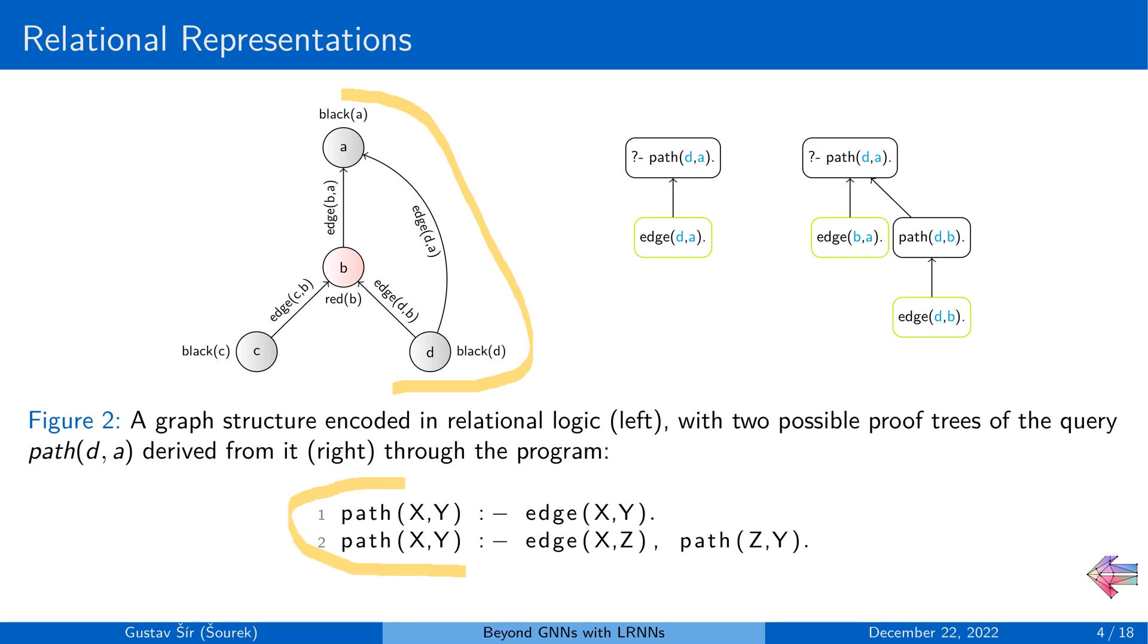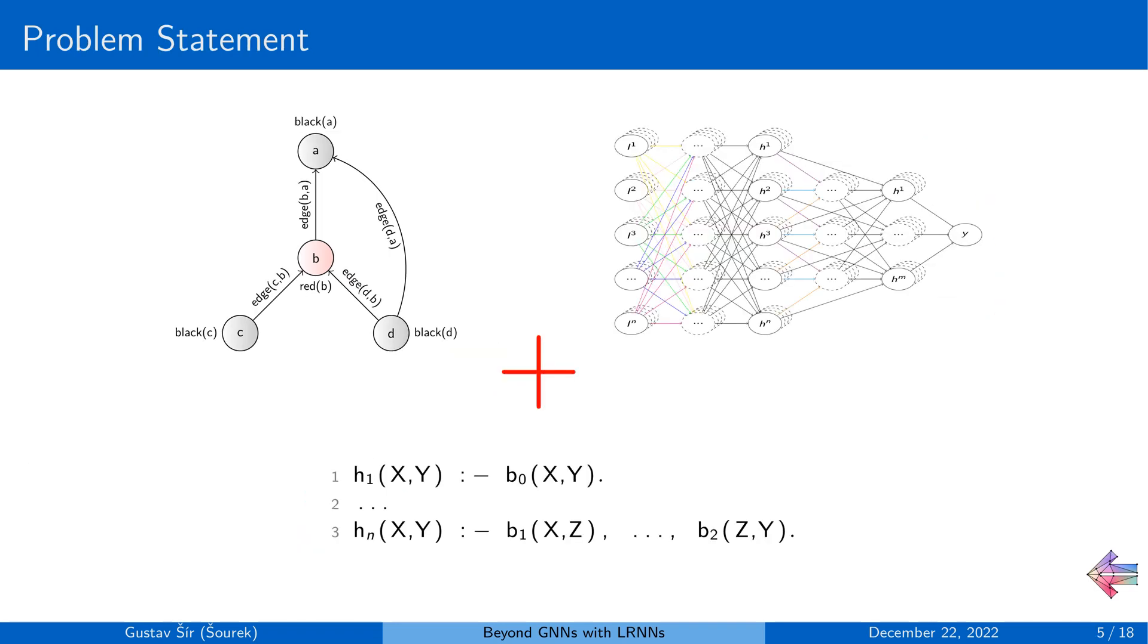And now the inference with these models can also be conveniently visualized in the form of computational graphs, commonly referred to as proof trees or resolution trees. Now the research question is how do we combine these two paradigms to make neural networks learn with these rich relational representations or, from the other perspective, how to use gradient descent in inductive logic programming?